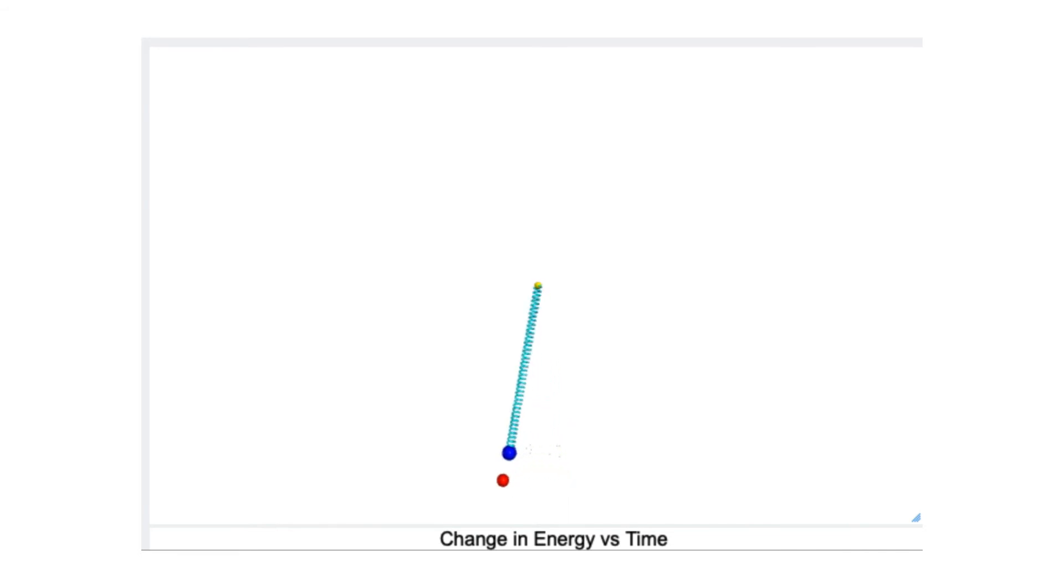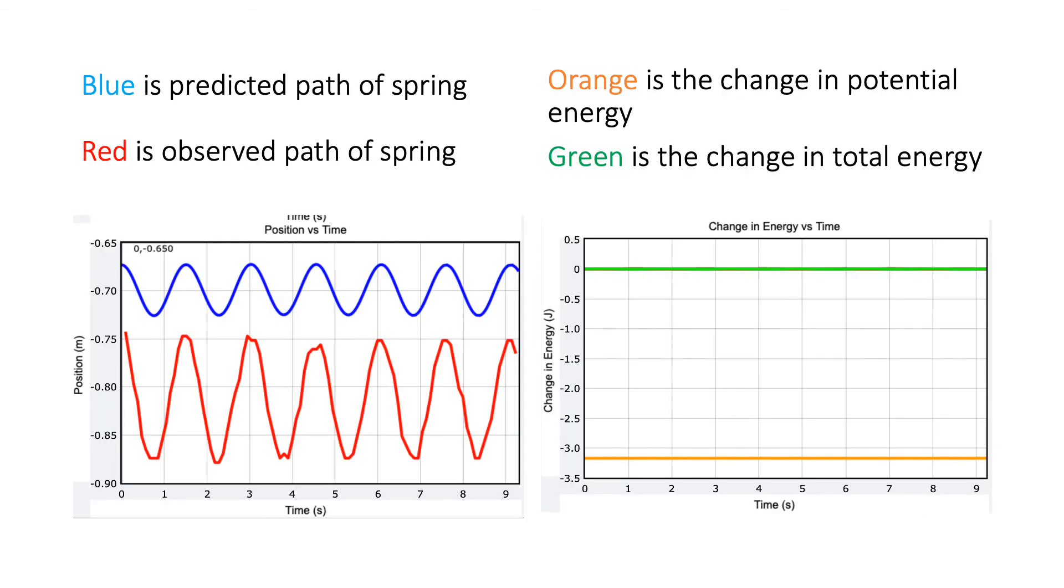This is the data I received from it. I have two graphs here. Blue is the predicted path of the spring or what Glowscript predicted it to be, and red is the observed path. You can see the blue path has a lot less displacement than the observed position. There are a couple things that could define that, which we could label as just a miscalculation of gravity.